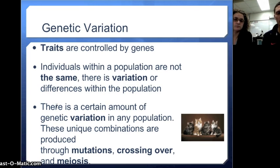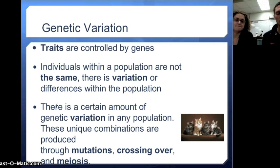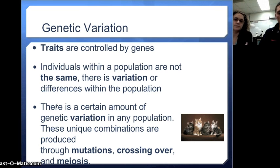Starting out with genetic variation — traits, as we talked about in our DNA unit, are controlled by genes. Genes are sections of DNA on a chromosome, and each chromosome usually has lots of genes. Each individual has different forms of traits, and individuals in a population are not always the same — there's variation or differences within the population.